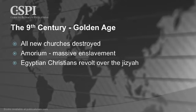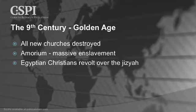There was an order from the Caliph, the ruler of Islam, to destroy all new churches. At Amorium there was massive enslavement of Greeks, and the Egyptian Christians revolted over the jizya. The Copts — these are the Coptic Christians who are suffering today — this is the beginning of their suffering. The jizya was the tax on the dhimmi.